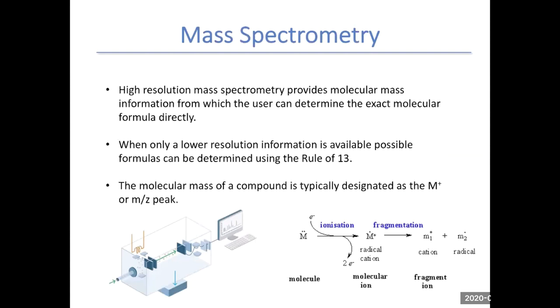High resolution mass spectrometry provides molecular mass information from which a user can determine the exact molecular formula directly. However, when only lower resolution information is available, possible formulas can be determined by using the rule of 13. The molecular peak of a compound is typically designated as M+ or M/Z, mass over charge peak.